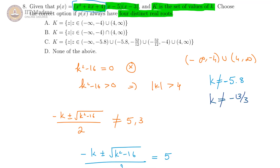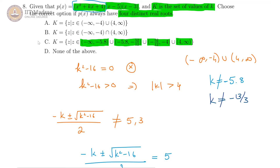Looking at the options, we see that option C gives (-∞, -5.8) ∪ (-5.8, -13/3) ∪ (4, ∞). The open intervals exclude both -5.8 and -13/3. This is correct — we are excluding all values between -4 and 4, and also excluding -5.8 and -13/3.